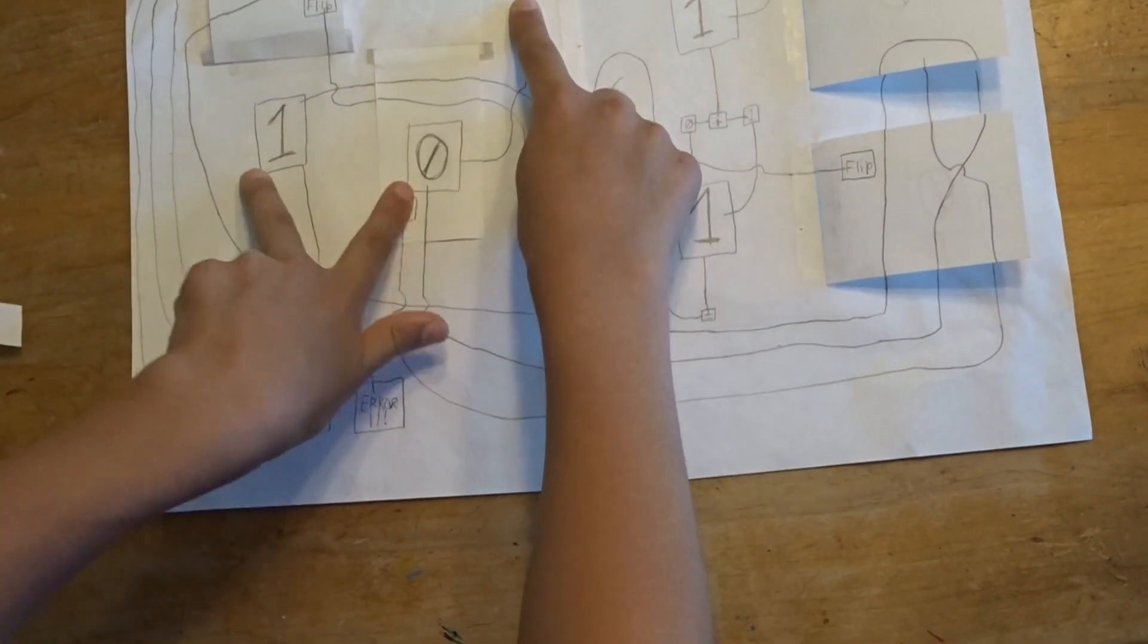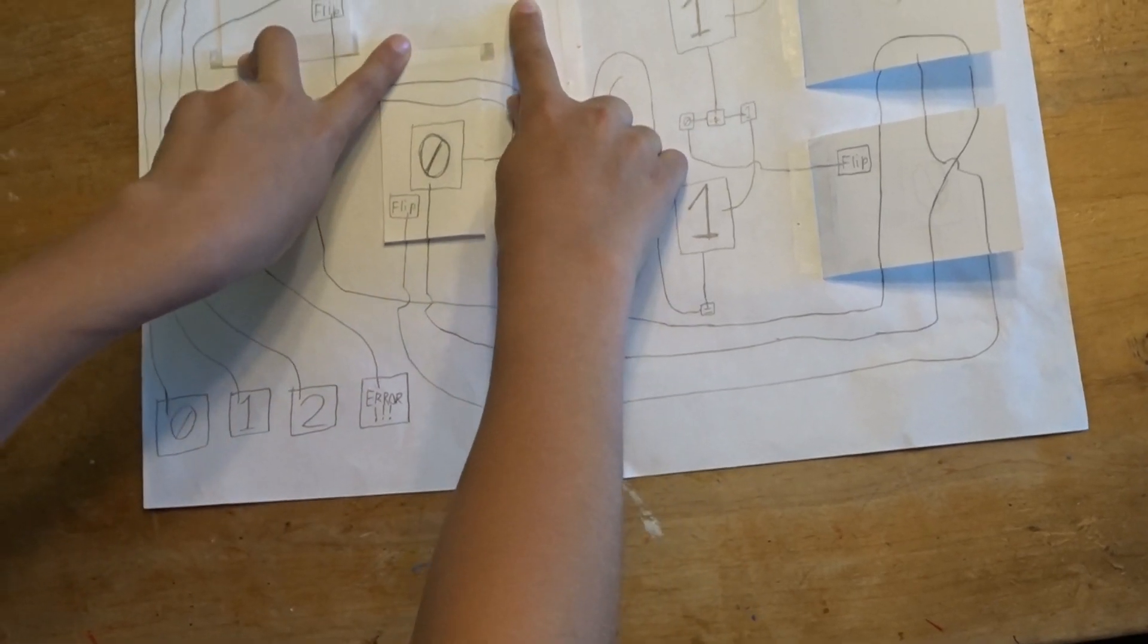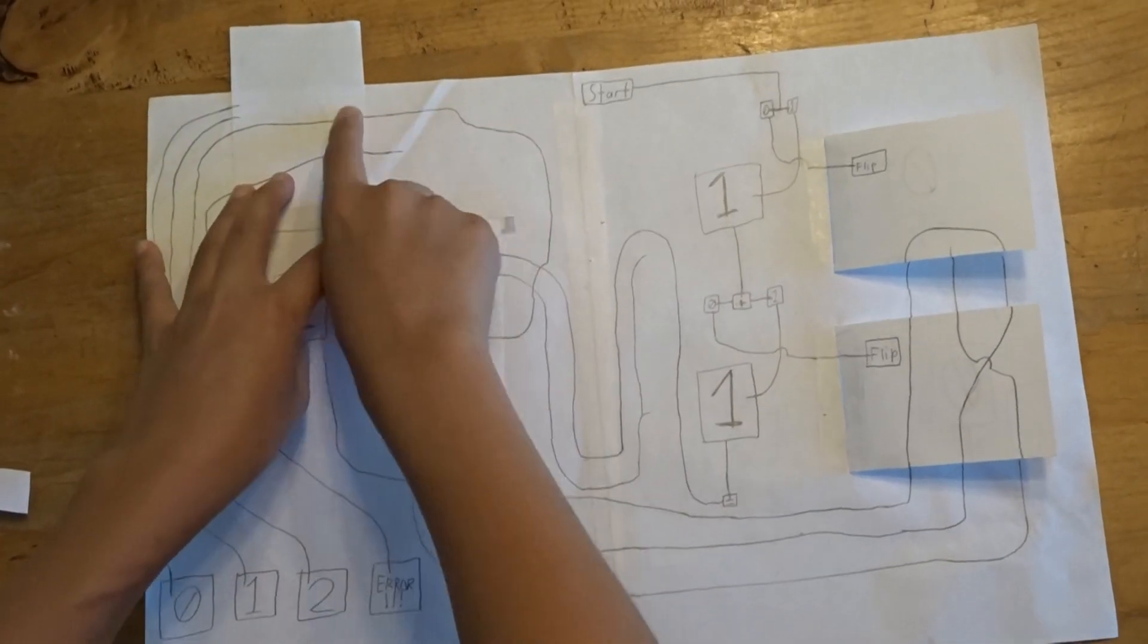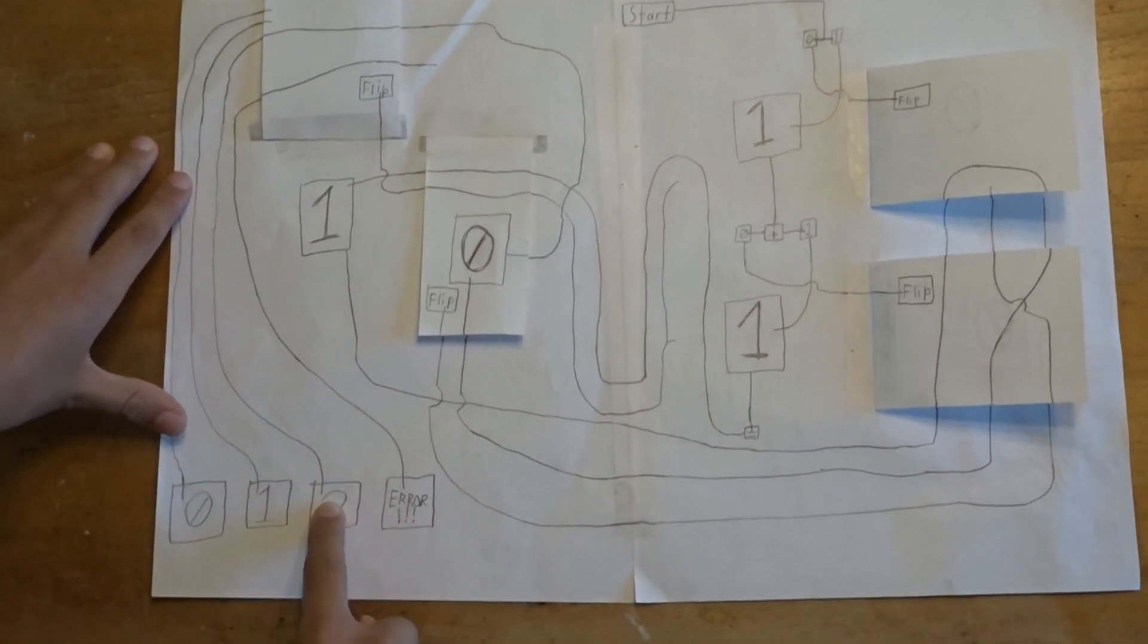So now you can see it says 2 in binary, but I added a decoder so that you don't have to know how to read binary to use it. So if we follow it here, we get to 2.